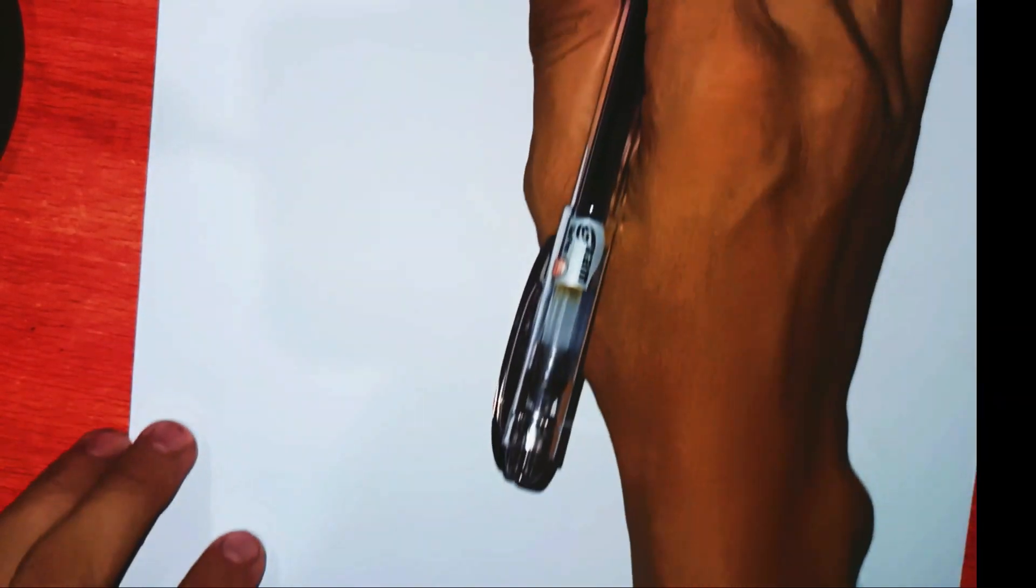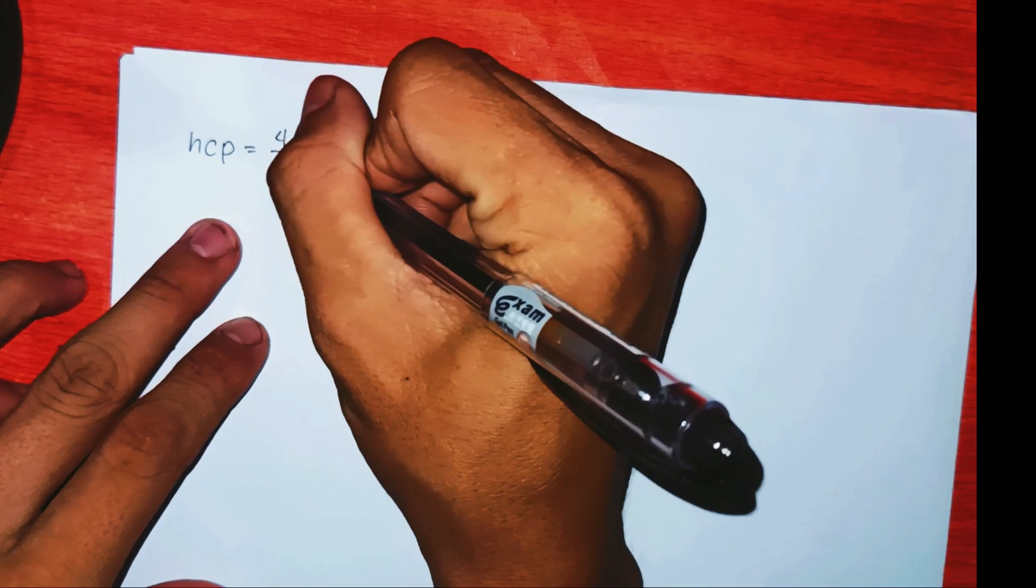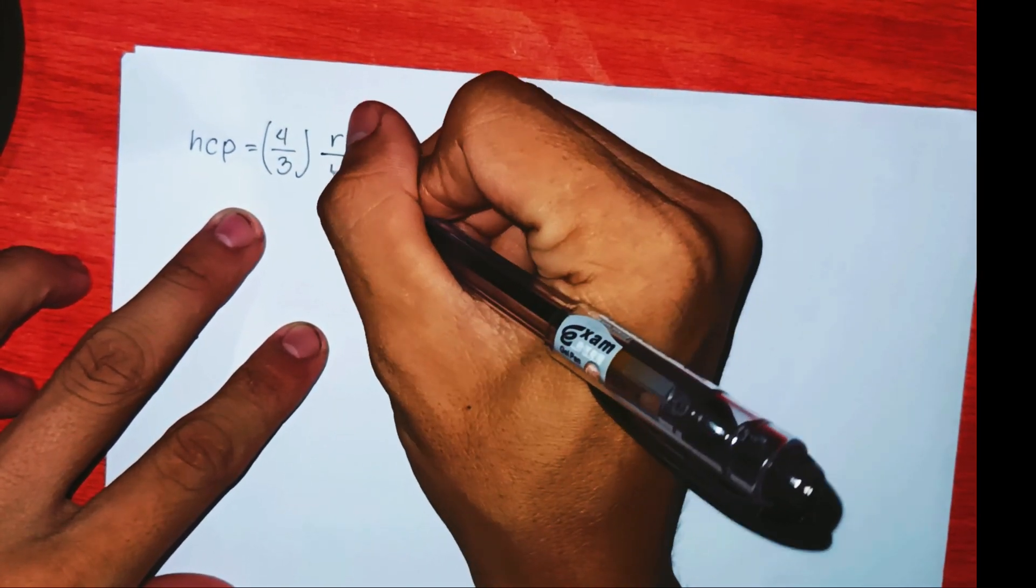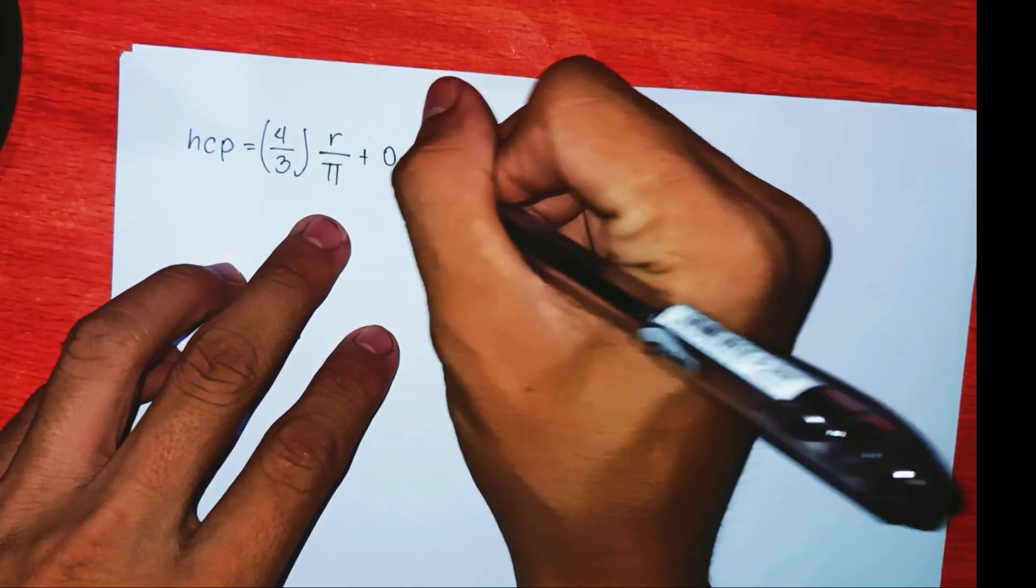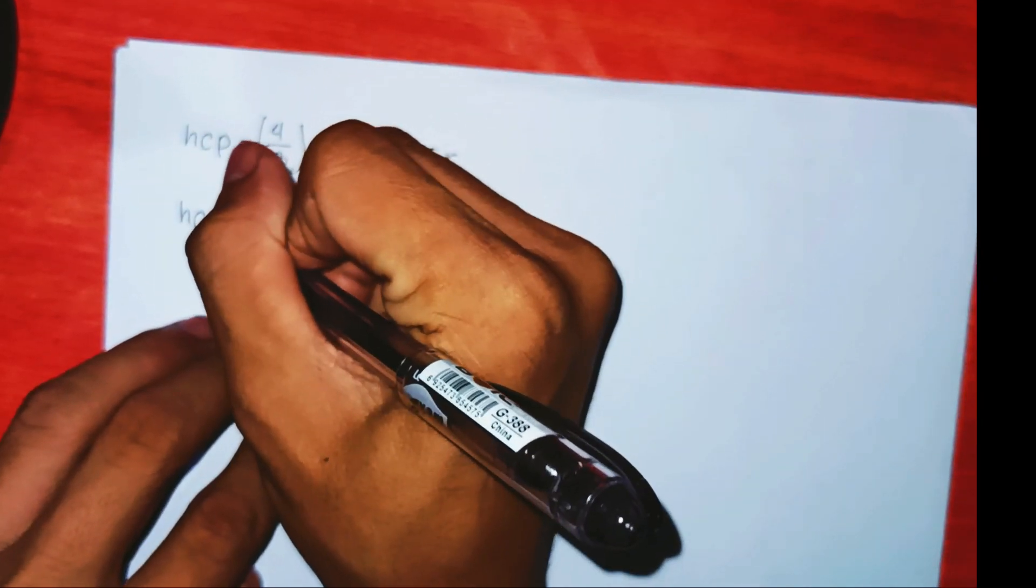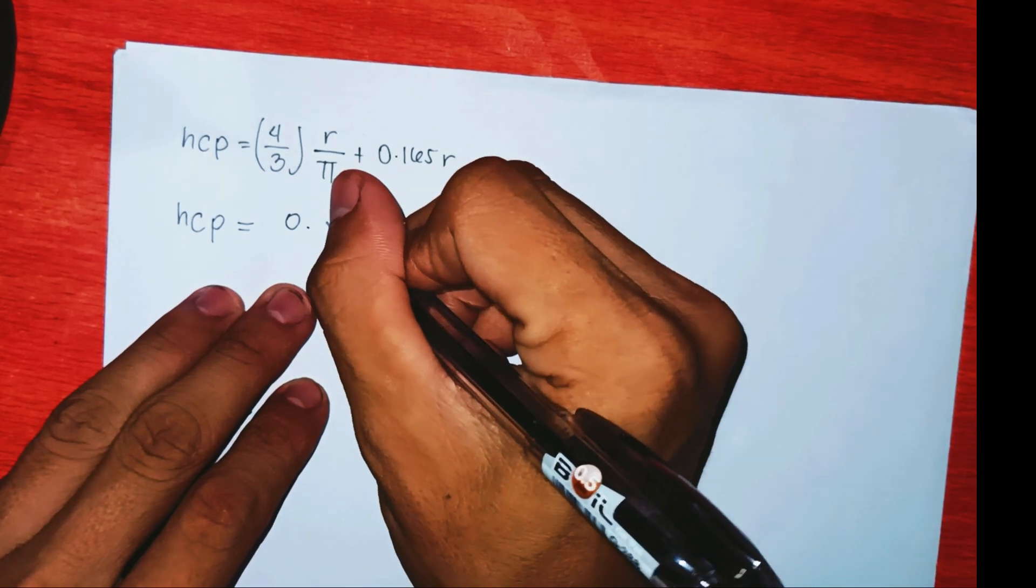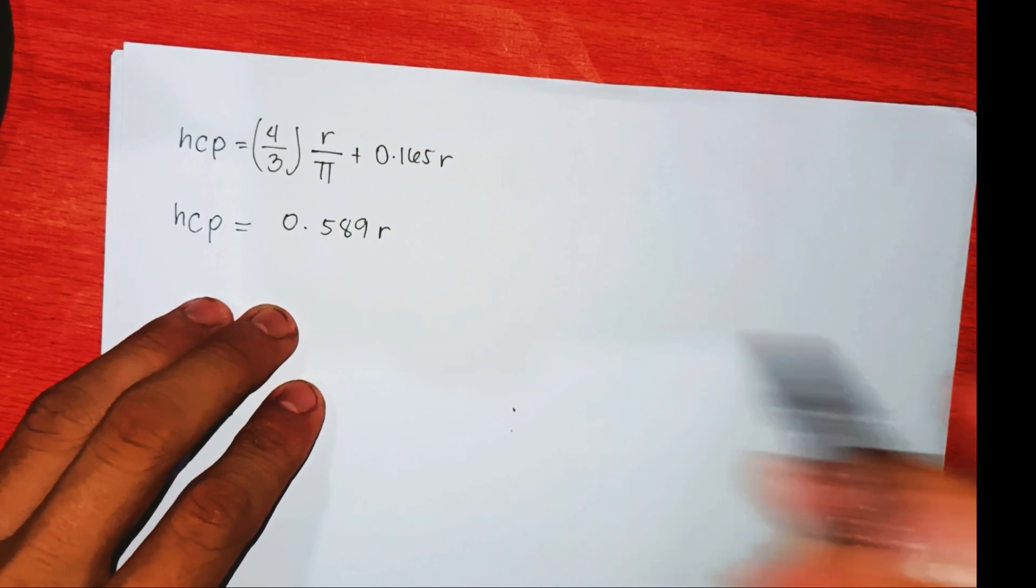So hcp equals 4 over 3 times r, r over pi plus e, which is 0.165r. We have here the answer: hcp equals 0.589r. So here is our answer.